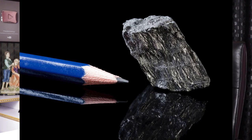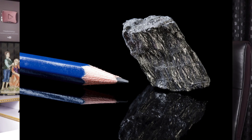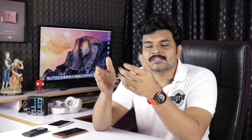Graphene is related to graphite. We use graphite in pencils, batteries, and nuclear reactors — for example, as a moderator in sodium-graphite nuclear reactors. Graphene can be used in many of these applications as well.